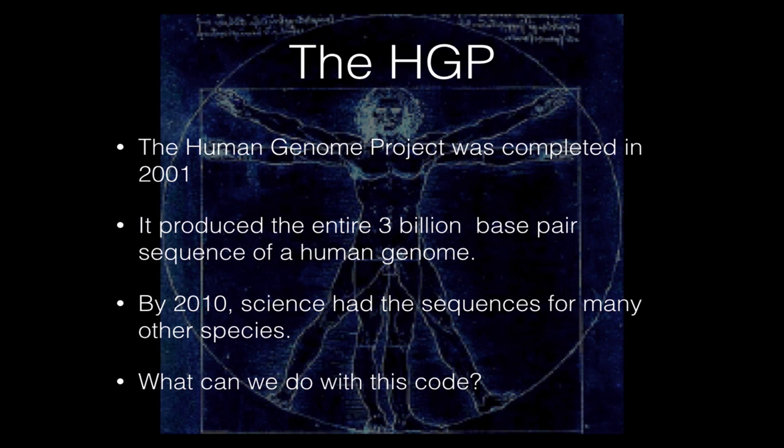By 2010, scientists had applied the same technique to lots of other species, so we had genome sequences for rats, mice, mosquitoes, and crop plants like rice, yeast, and many more. Lots and lots of other species have been sequenced since 2010.